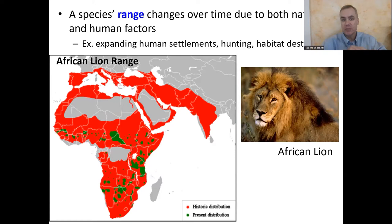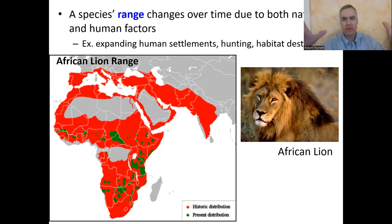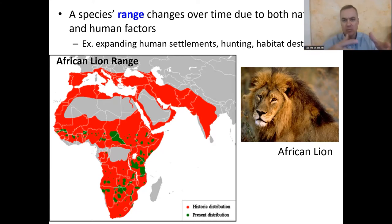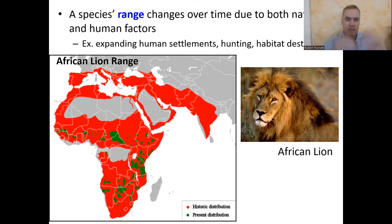A species' range will change over time due to many different factors. Natural factors include the ice age, or climate changes — getting too hot, too cold, too wet, too dry. But also human factors, like humans paving over part of its habitat and turning it into a parking lot.